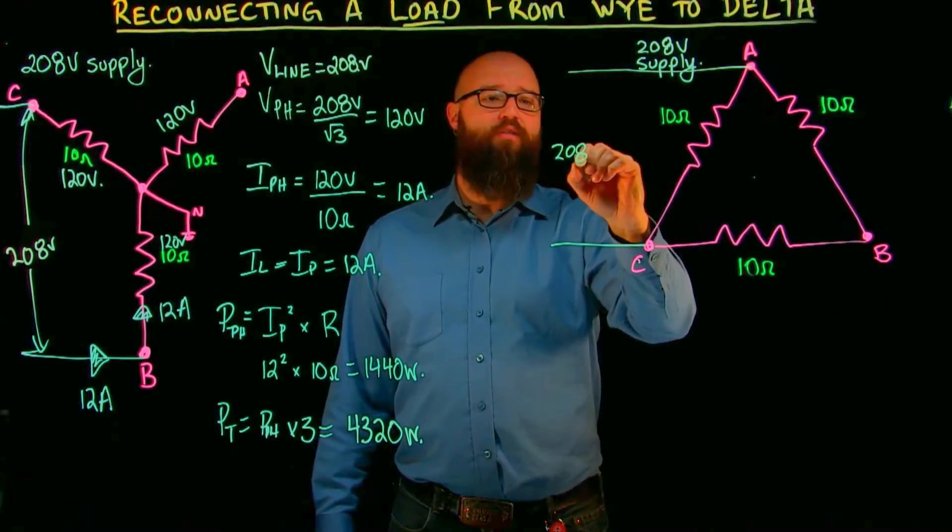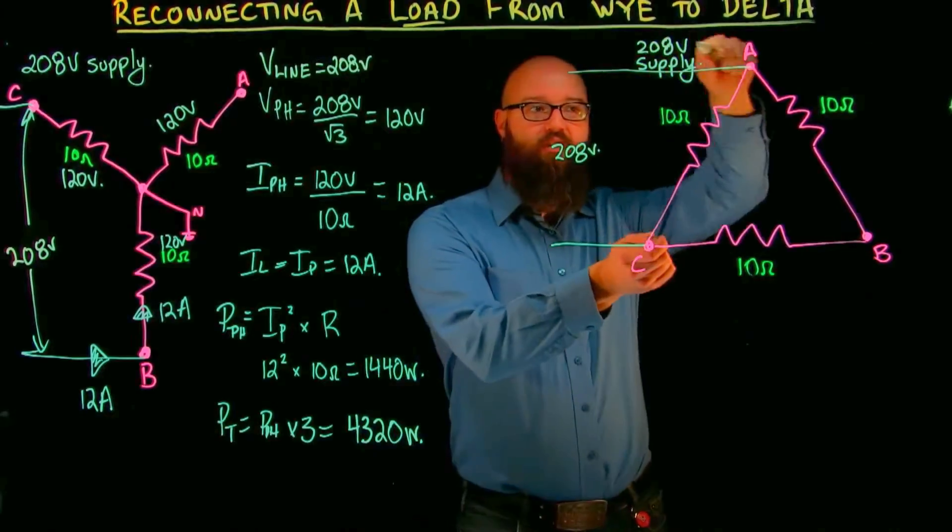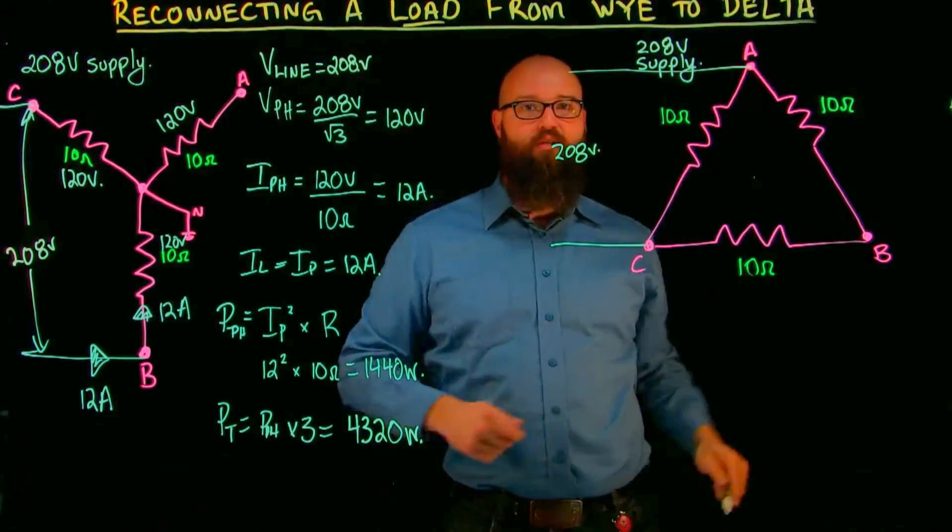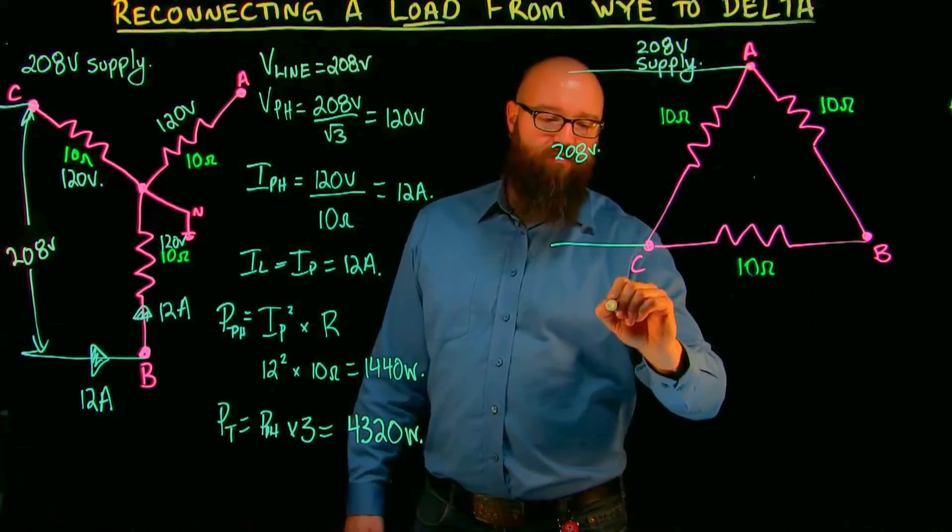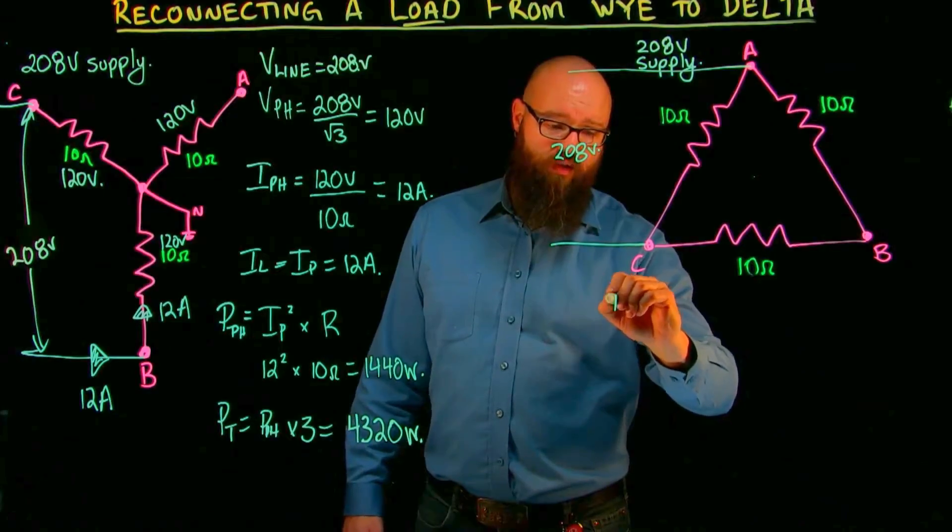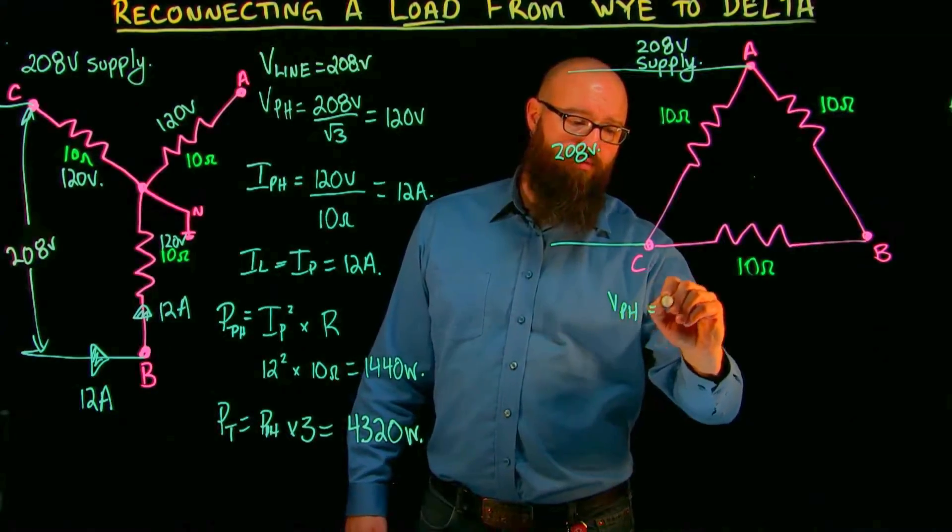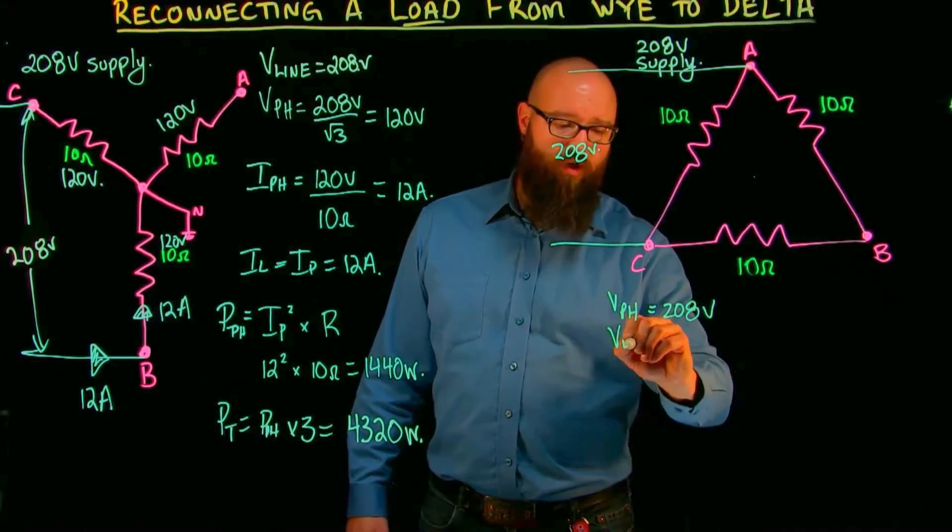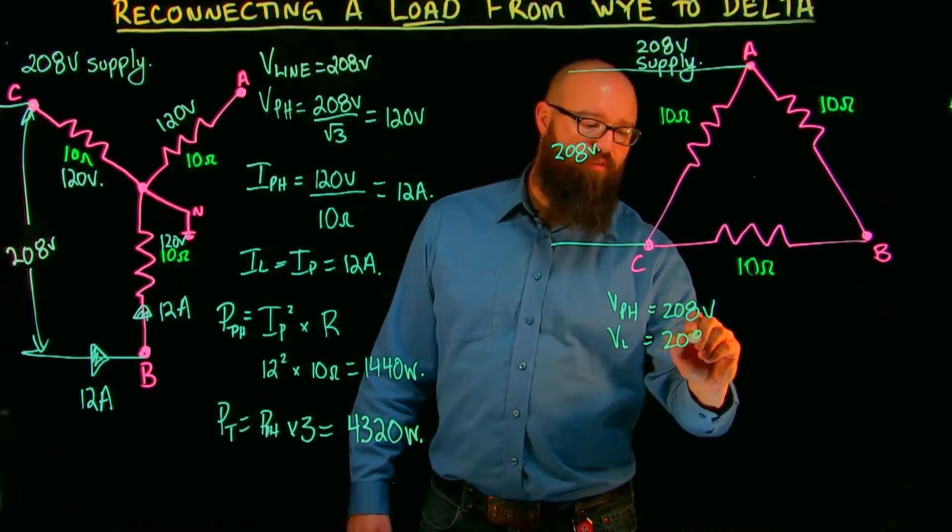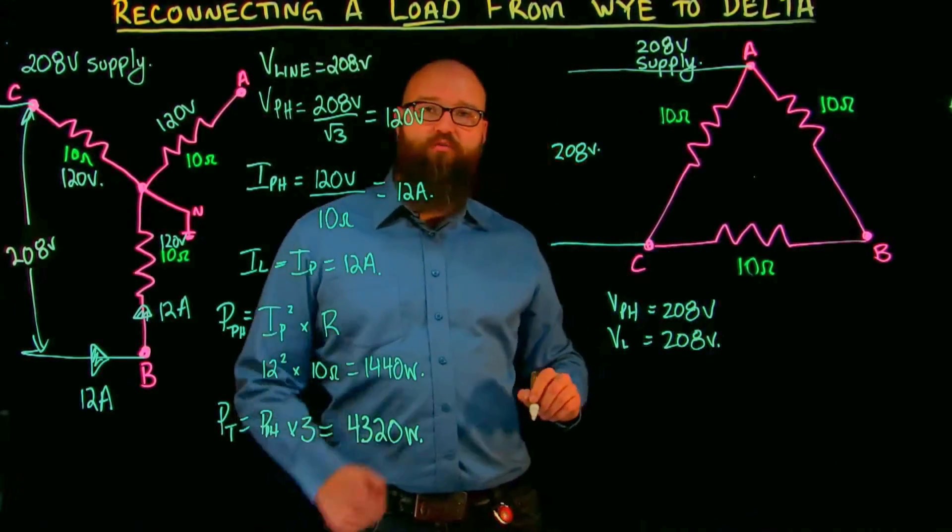So we know that our phase voltage, voltage of the phase equals 208 volts, voltage of our line equals 208 volts. And we're going to do the same calculation. We're going to go I phase first.